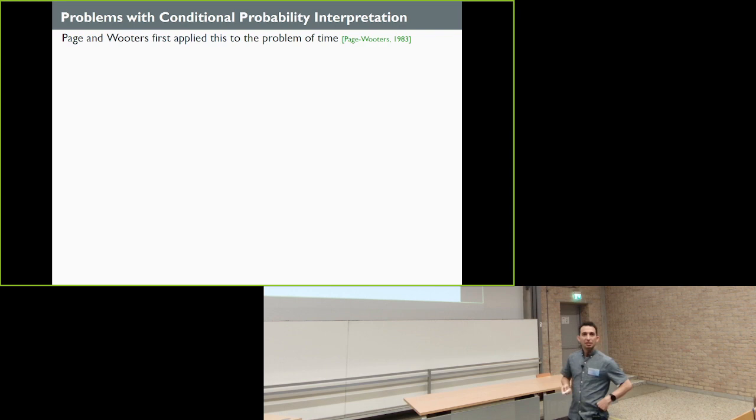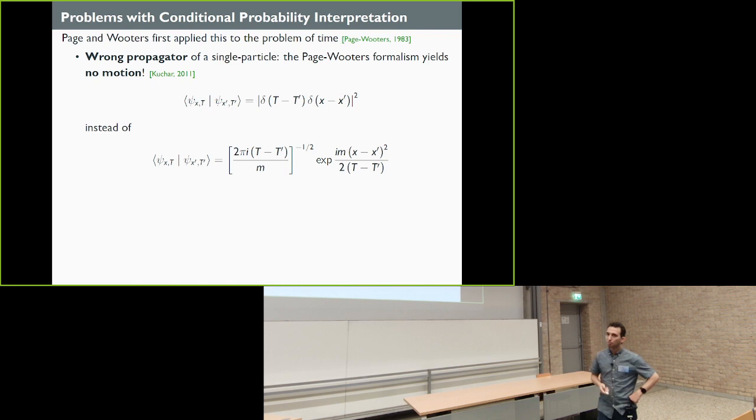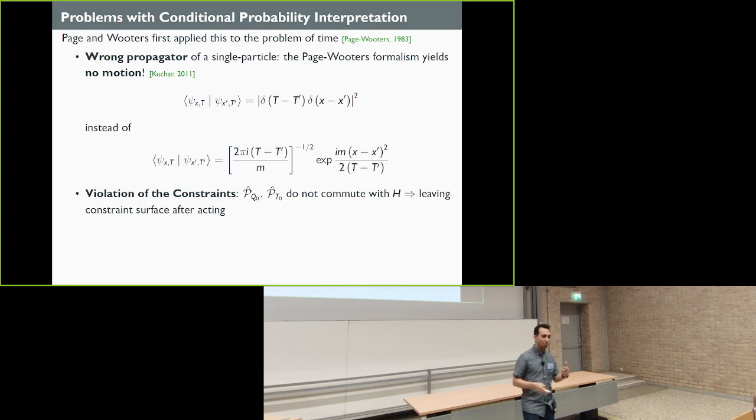The Page and Wooters, first 1983, they use this method to answer the problem of time. So we don't have evolution with respect to small t, but we have evolution in this way, with respect to realistic clocks. So what goes wrong in their formulation? They get the wrong propagator. Kuchar showed that, the wrong propagator for the single particle system or single particle state. This basically means that the particle is not moving in time or space, which it should be like this, but they get it like that. So that's a problem. Another thing is that for them, because they construct these clocks and variables out of non-Dirac observables, these don't commute with your Hamiltonian, so the action of them just throws you out of the constraint surface, so you have a problem with that too.